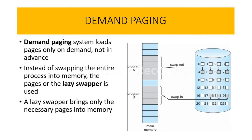Looking at the diagram, this shows the transfer of pages from the disk to main memory and vice versa. As you can see, we have two programs. The pages which are not required by program A are swapped out — meaning they are removed from main memory and placed back onto the disk.